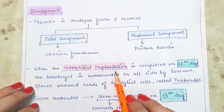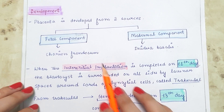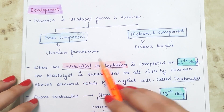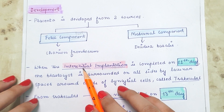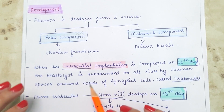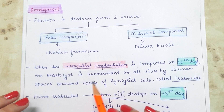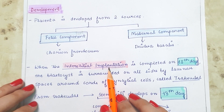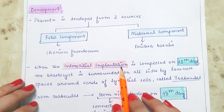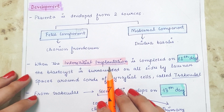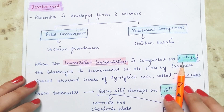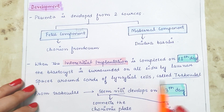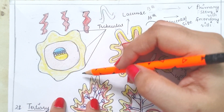Implantation is completed on the 11th day. Implantation is when the fertilized ovum or blastocyst attaches to the wall of the uterus. When the blastocyst deeply penetrates into the decidua, that is known as interstitial implantation. When implantation is completed, the blastocyst is surrounded on all sides by lacunar spaces and trabeculae, as shown in the diagram.